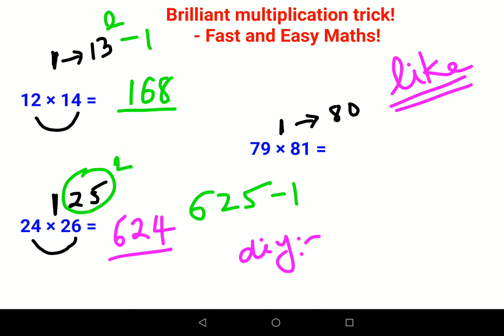So here again, 80 square is 6,400. So subtract one from it, you get 6,399.